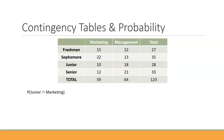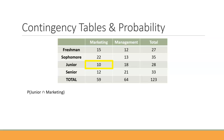Now we're working with the 'and' — the intersection — junior and marketing. We look at the two variables: the junior row and the marketing column. This is the intersection, where it's both a junior and a marketing major, so it's just that 10 — the 10 students who are both juniors and marketing majors. That becomes our numerator, and we divide by the grand total of 123, which comes out to 0.08 — roughly an 8% chance that a student is a junior and a marketing major.